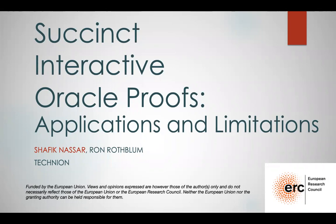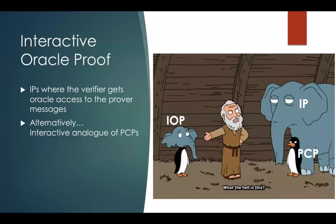Let's start by breaking down the title: what are interactive oracle proofs, or IOPs in short? IOPs are a new type of proof system that generalizes both traditional interactive proofs and PCPs. We can think of it as an interactive proof where the verifier only gets oracle access to the prover messages, rather than the full access in a traditional interactive proof. Alternatively, we can think of it as an interactive analog of a PCP — so a PCP is basically a one-round IOP.